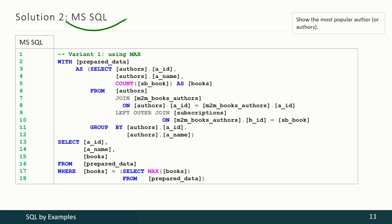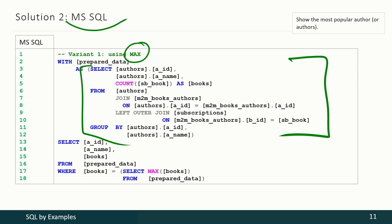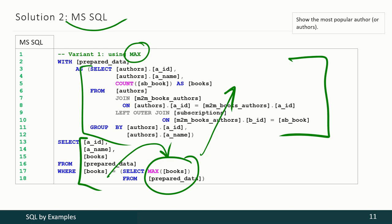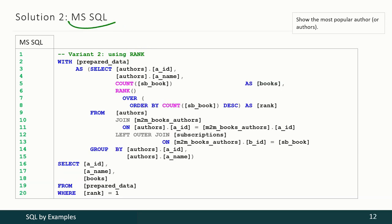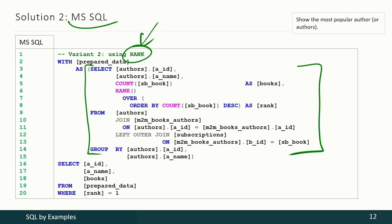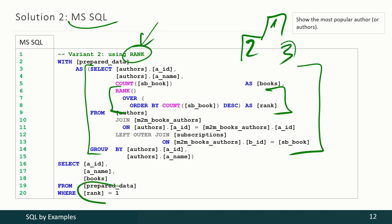With Microsoft SQL Server we may also use the MAX function. We calculate how many books were taken by subscribers for each author, select the maximum value from that information, and then select only authors having books taken equal to that maximum value. The second approach for Microsoft SQL Server is the same as for MySQL — we use the RANK function, calculating how many books of each author were taken by subscribers and also calculating the rank, then selecting only those authors standing on the first place.